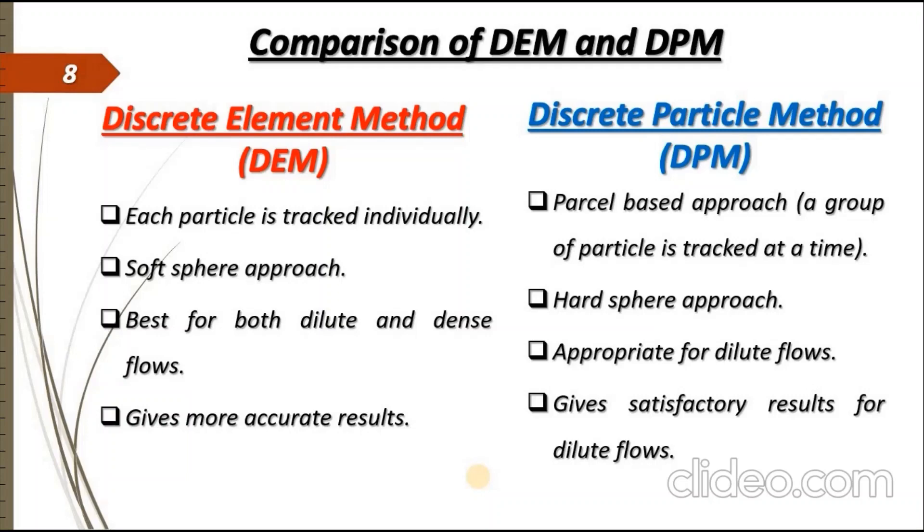DEM is best for both dilute and dense flows and gives more accurate results, while DPM is only best for dilute flows and gives satisfactory results for dilute flows. This means DPM cannot be used for very high concentrations of particles, while DEM can be used for low and high concentration of particles, for both dilute and dense flows.